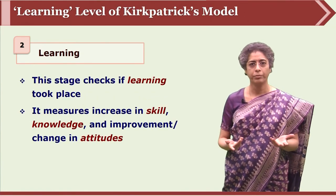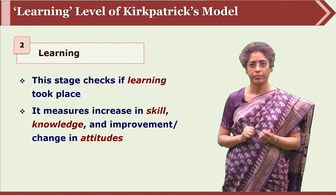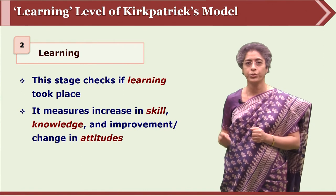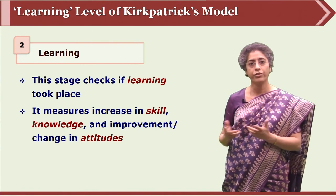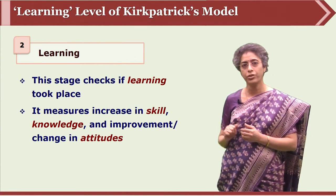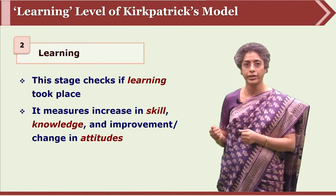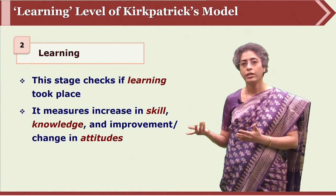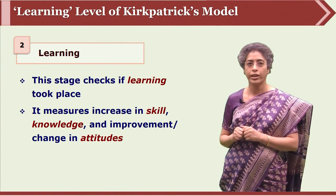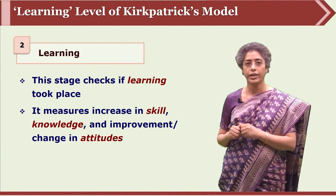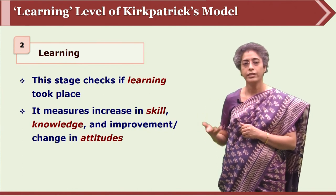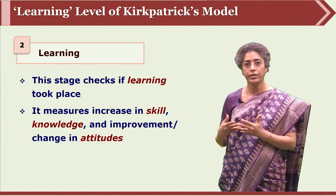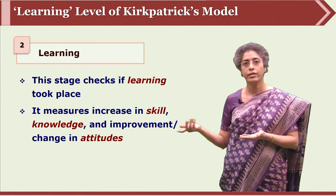Every training program is planned with certain outcomes. Just as participants' reactions are important, it is also important to determine whether those outcomes were achieved — outcomes related to the content taught, the skills on which participants were trained, and attitude changes if those were expected. If these are met, we can say that learning happened. This kind of evaluation is called Learning evaluation in Kirkpatrick's model.